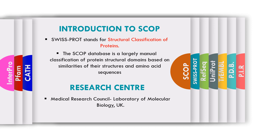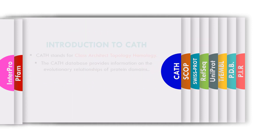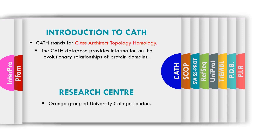The next database is CATH, which stands for Class, Architecture, Topology, and Homology. The CATH protein structural classification database is a freely and publicly available resource that provides information about the evolutionary relationship of protein domains. If you want to study the evolutionary relationship between different proteins, you can go to this CATH database. Its research center is at the ORENGO Group at University College London.